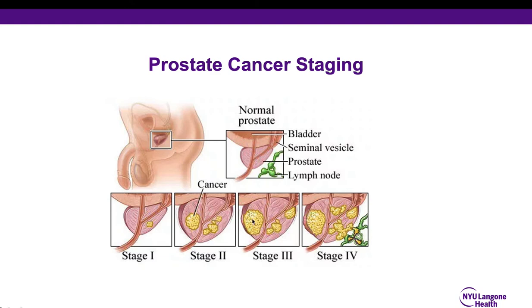Now, if the prostate cancer is what we consider locally advanced — perhaps extending beyond the prostate, into the seminal vesicles, or beyond the borders, or is associated with very high Gleason scores — then this is considered stage three prostate cancer. And finally, stage four prostate cancer involves prostate cancer that has traveled outside of the prostate to other areas, such as the lymph nodes, to bone, or other adjacent organs such as the rectum.